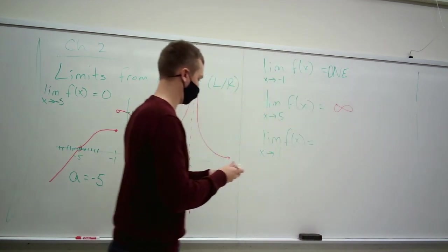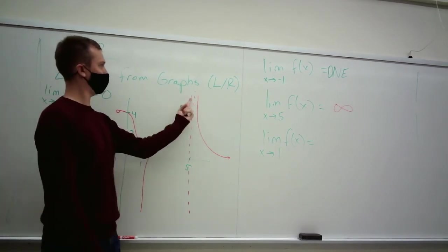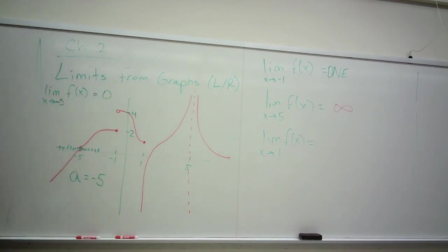We can make something as large as we want. Here from the left, it goes to positive infinity. Here from the right, it goes to positive infinity. So we say the limit exists and is infinite.